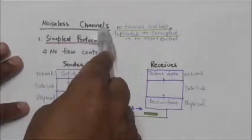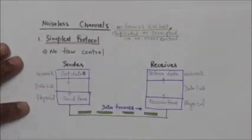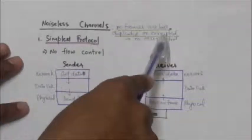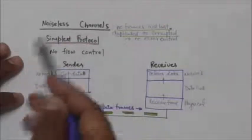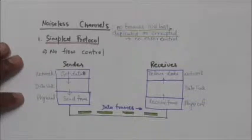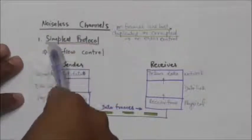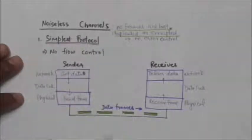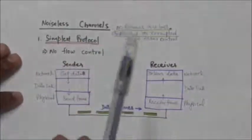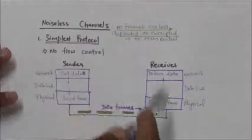First of all we are going to study the protocols used for noiseless channels. In this case we have assumed an ideal channel in which no frames are lost, duplicated, or corrupted. Therefore protocols for noiseless channels do not have error control. The first is the Simplest Protocol, which is used for noiseless channels and has no flow or error control.